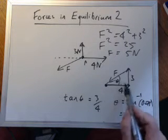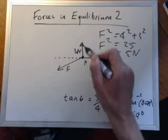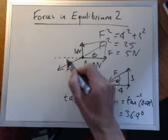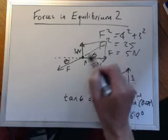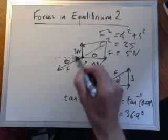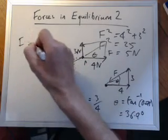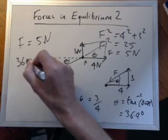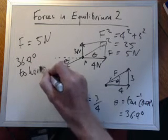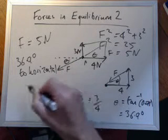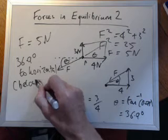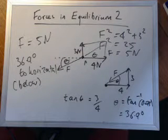It comes up to 36.9 degrees. So, when you find that angle there, of course, that's theta there, you can then use those two angles opposite to find out what angle F is. So, you can write F is equal to 5 newtons at 36.9 degrees to horizontal. So, that's one method of finding a third force when you've got three forces.